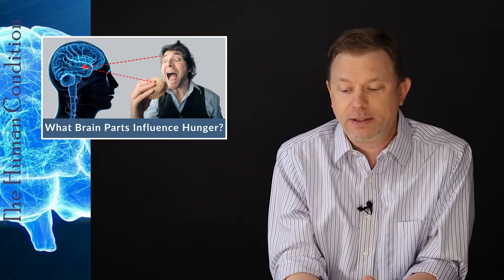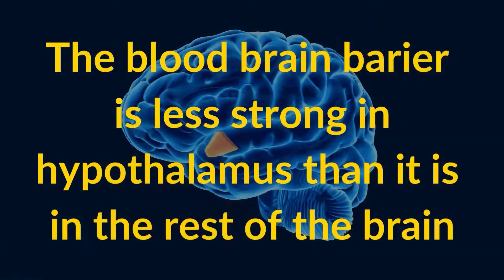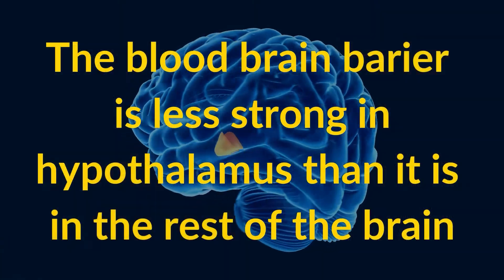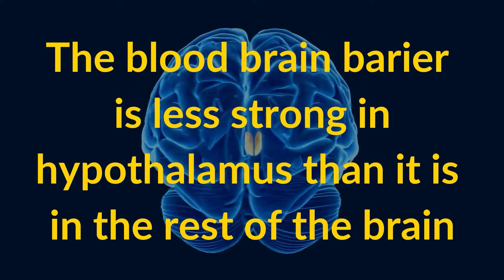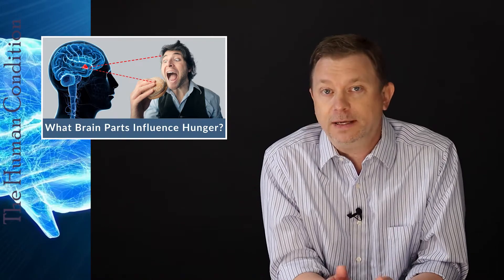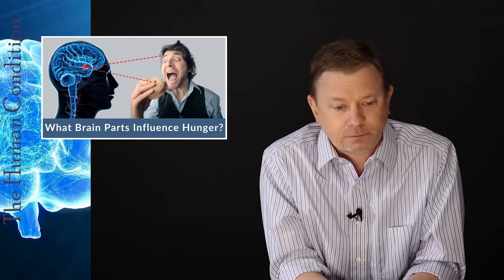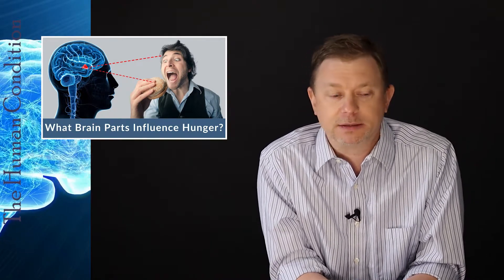It's quite complicated, but for this discussion today we're talking about satiety. The blood-brain barrier in the hypothalamus is less strong than it is in the rest of the brain. There are maybe four areas in the brain where the blood-brain barrier is thinner, or less powerful, or less protected than the rest of the brain. So the hypothalamus is a vulnerable place.